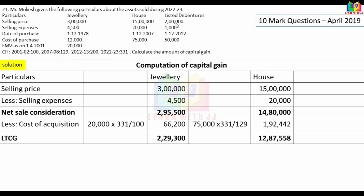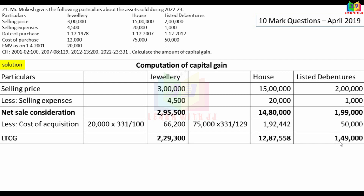Next: listed debentures. Listed debentures held long-term: Rs.15,000. Selling price: Rs.2,00,000. Expenses: Rs.1,000. Net sale consideration: Rs.1,99,000. Purchase price minus indexed cost calculated. Long-term capital gain from debentures: Rs.1,49,000.